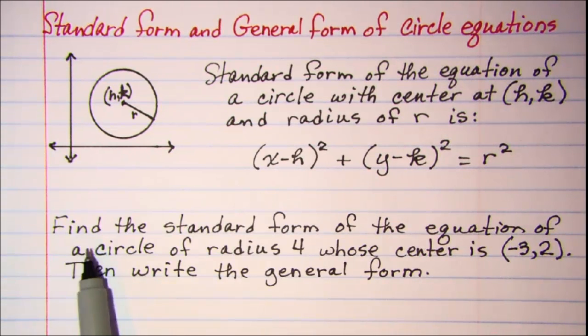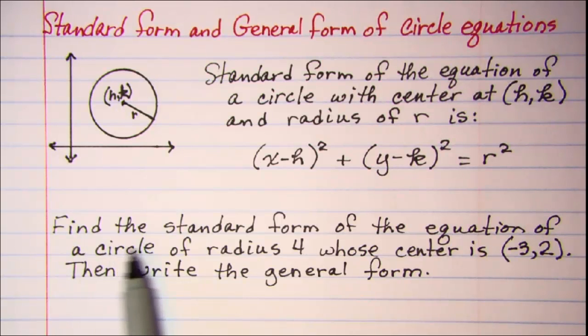The problem that we'll be working with is to find the standard form of the equation of a circle with a radius of 4 whose center is (-3,2). Then write the general form.